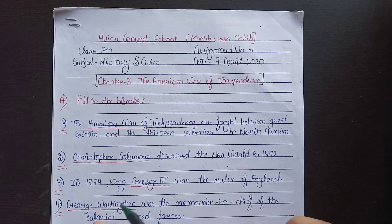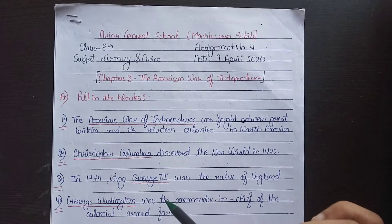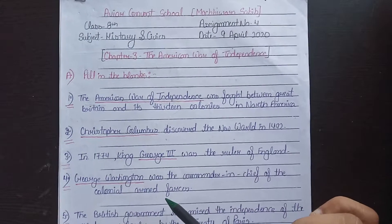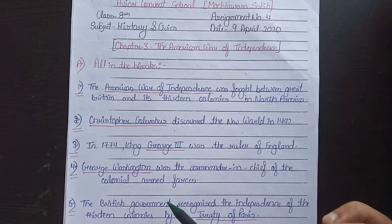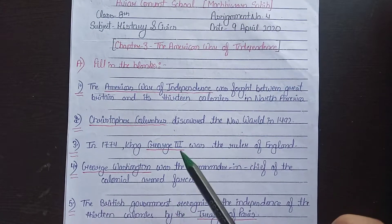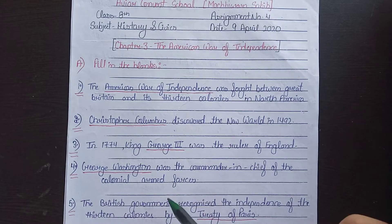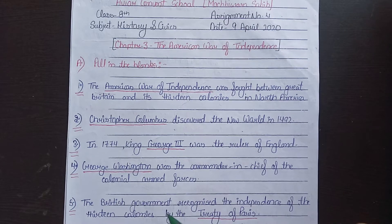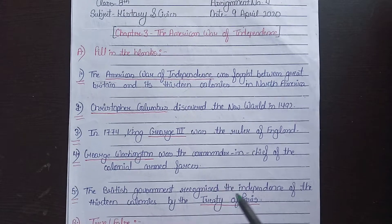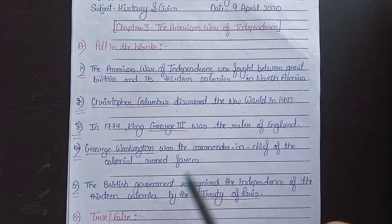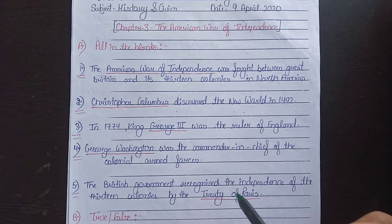George Washington was the commander-in-chief of the colonial armed forces. The British government recognized the independence of the 13 colonies by the Treaty of Paris.